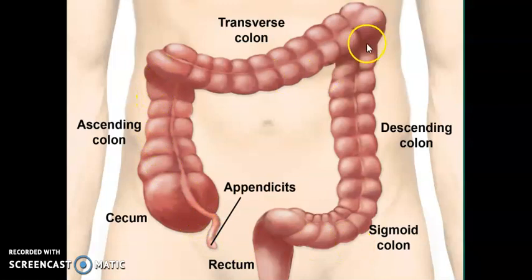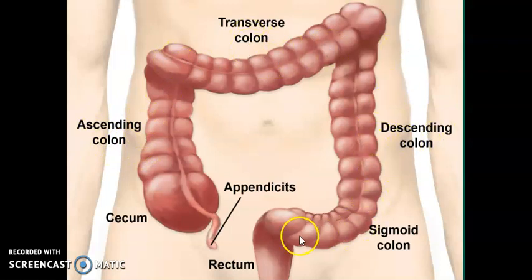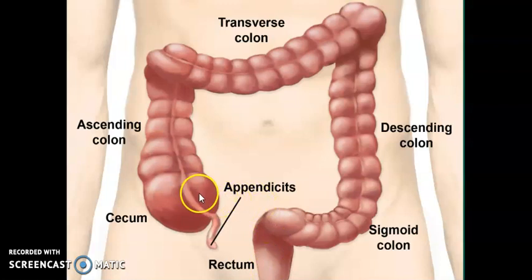The large intestine is larger in size compared to the small intestine, and the small intestine connects to it. Depending on their position, sections of the large intestine are named: ascending colon, transverse colon, descending colon, and the S-shaped part is called the sigmoid colon, followed by the rectum and anus. At the junction of the small and large intestine, you can see the appendix. The large intestine also has villi, and its main role is the absorption of water.